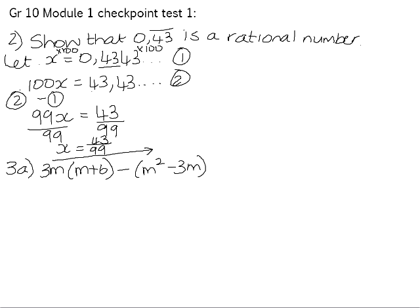Question 3a. There are two terms in this expression. There is the term where we have to multiply the 3m into the bracket, and there is a set of brackets, m squared minus 3m, and that bracket is being multiplied by negative 1.